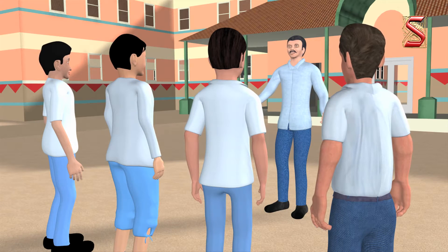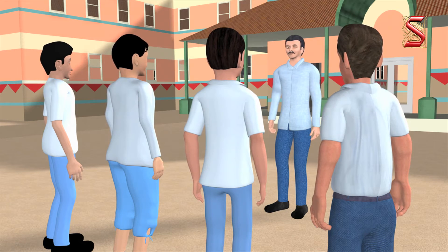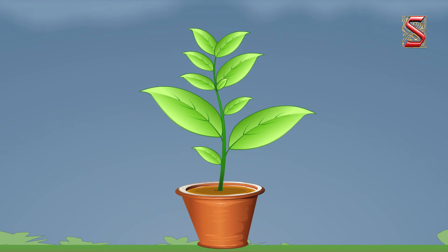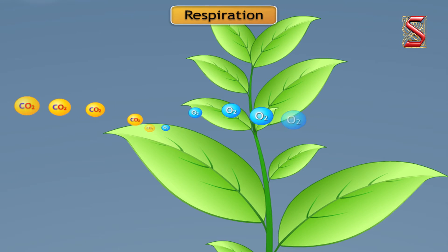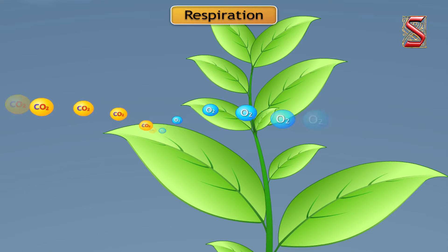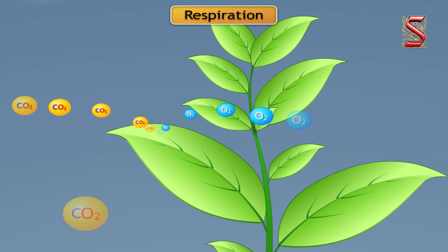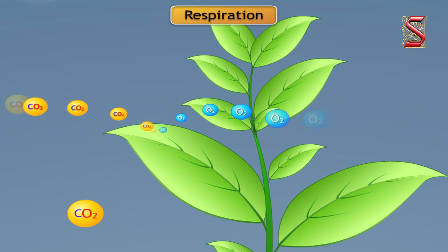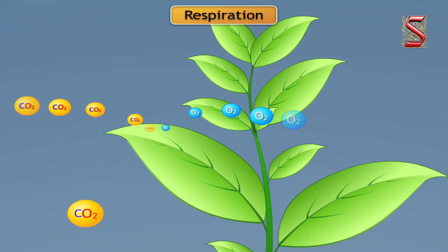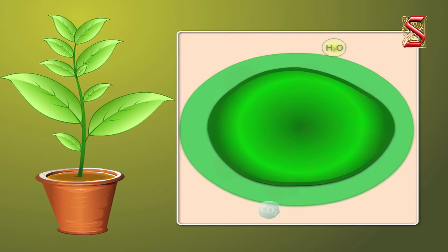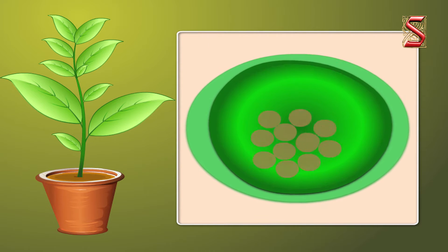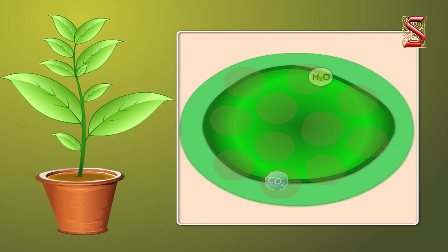Now let's look at these plants and see how they breathe. Plants also need respiration for their survival. Most of us know that plants take in carbon dioxide and give us oxygen. However, there is another fact as well: plants also take in oxygen from air and give out carbon dioxide. Plant cells also use oxygen to break down glucose into carbon dioxide and water, like other organisms.